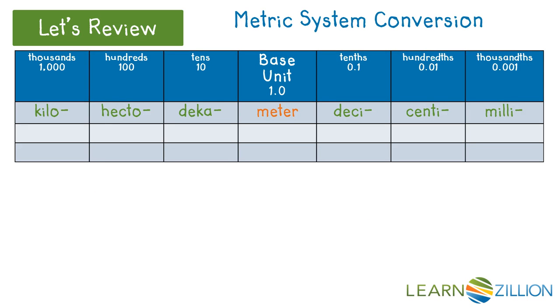Let's review metric system conversions. In converting a larger unit to a smaller unit, you have to multiply by a power of 10 by moving the decimal point to the right.